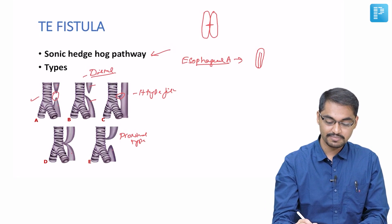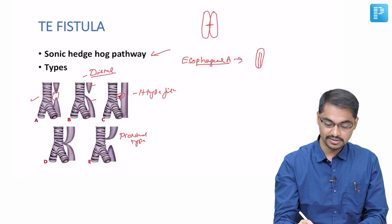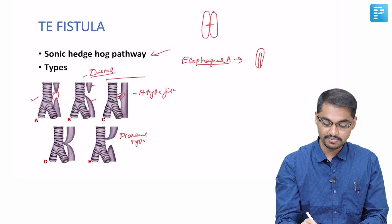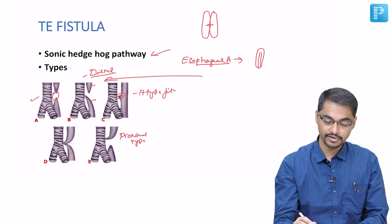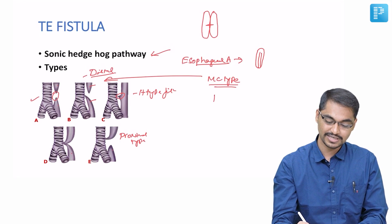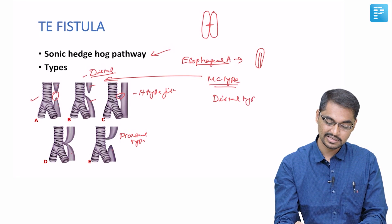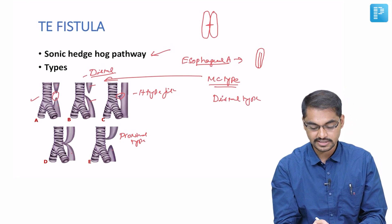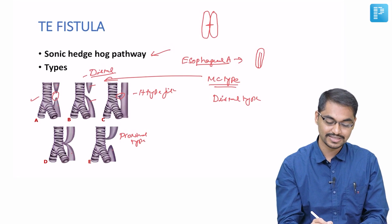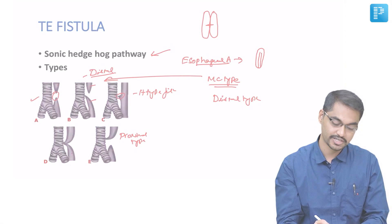In entrance examinations, they will ask which is the most common type of tracheoesophageal fistula. The distal type of tracheoesophageal fistula is the most common, wherein the proximal atretic segment ends as a blind pouch whereas the distal atretic segment communicates with the trachea.